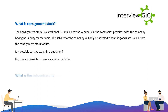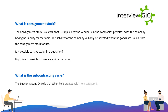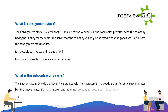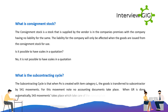What is the subcontracting cycle? The subcontracting cycle is that when a PO is created with item category L, the goods are transferred to the subcontractor by 541 movement. For this movement, no accounting documents take place. When GR is done automatically, 543 movement takes place, which takes care of the consumption of components from stock.